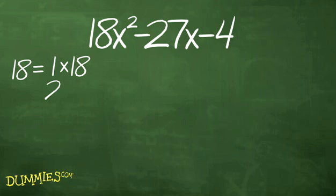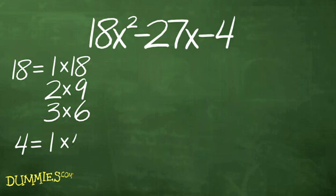First, determine all the ways you can multiply two numbers to get A. Second, determine all the ways you can multiply two numbers to get C. Third, look at the sign of C and your list from steps 1 and 2 to see if you want a sum or a difference. The last term is negative, so you want the difference of the products to be 27.